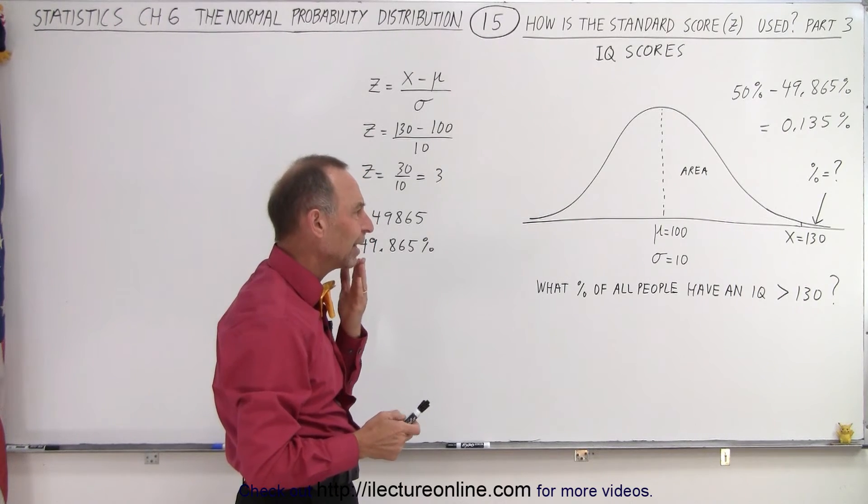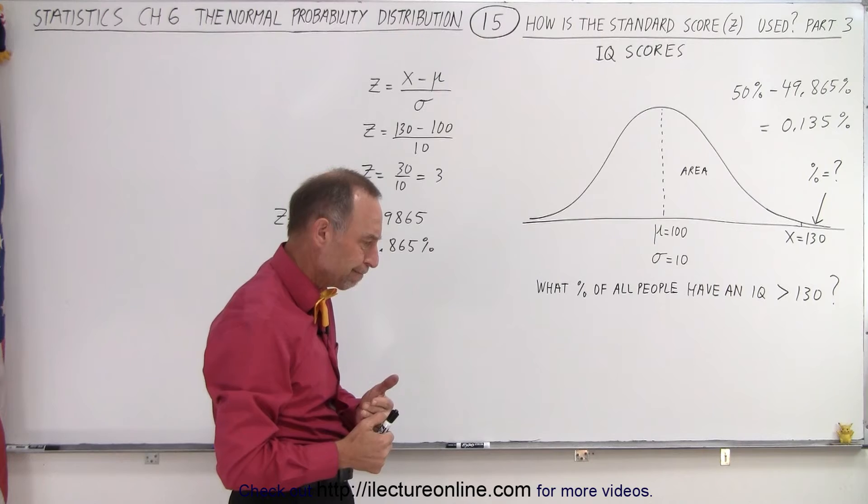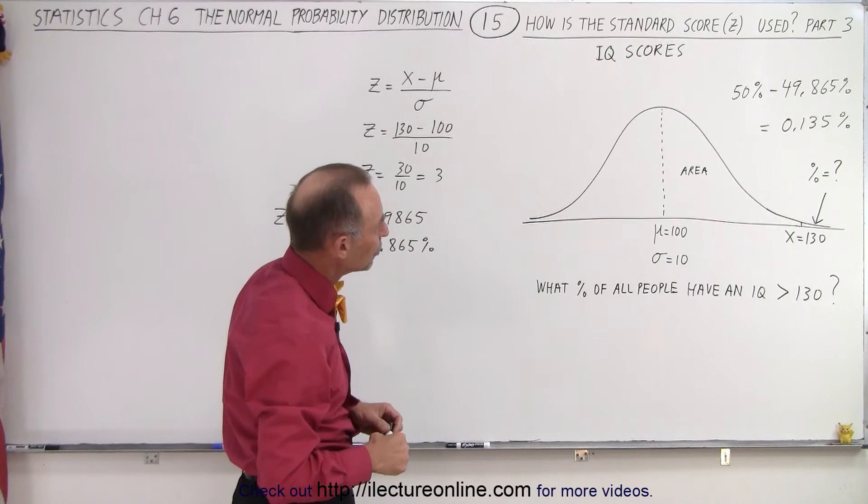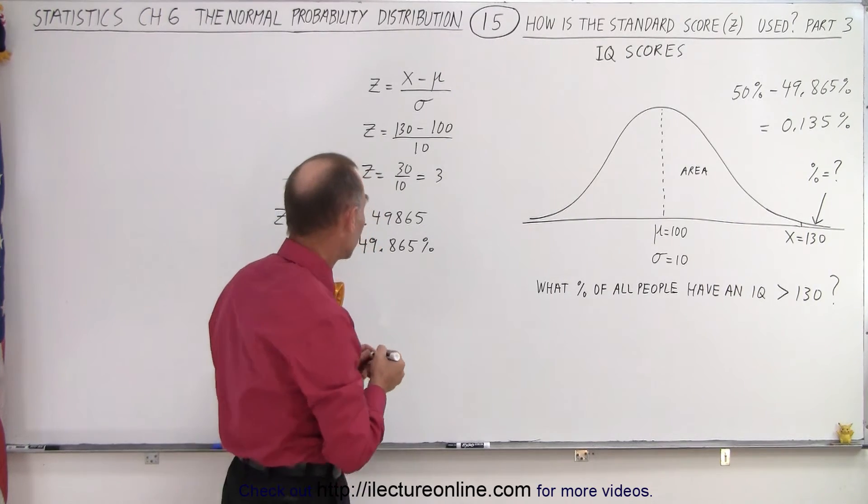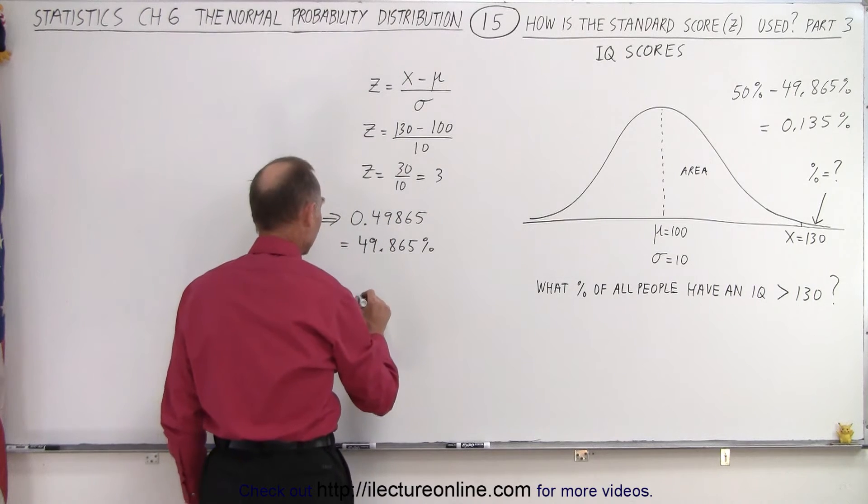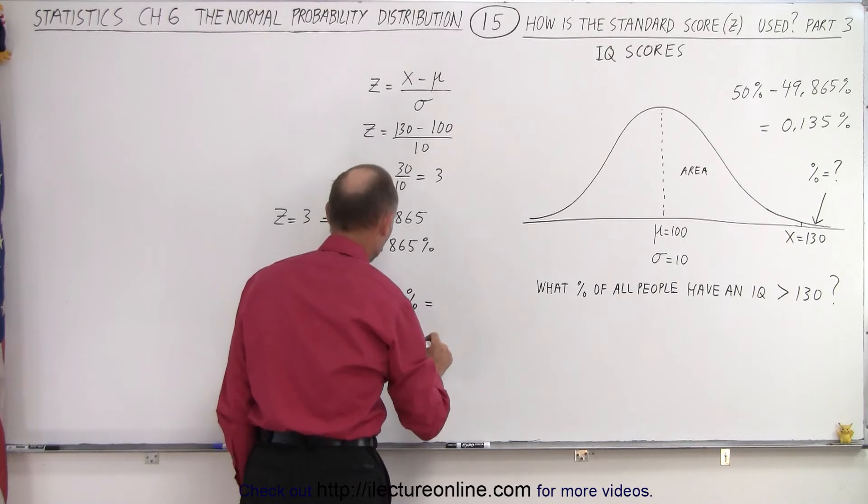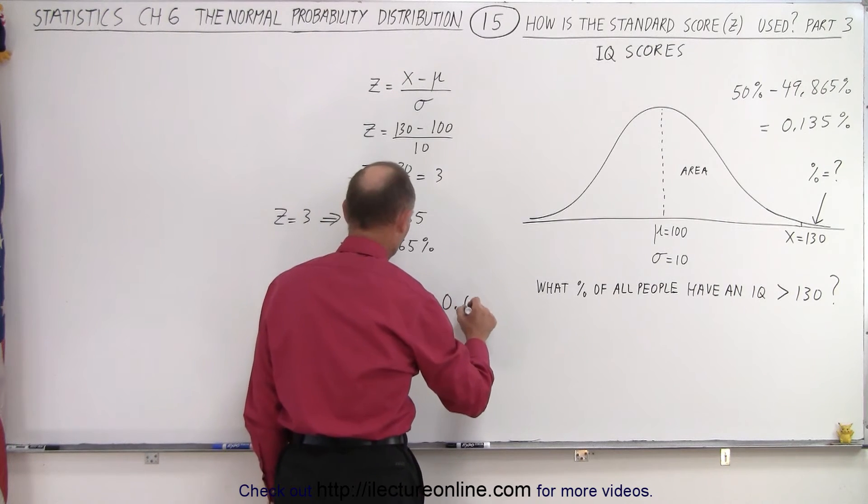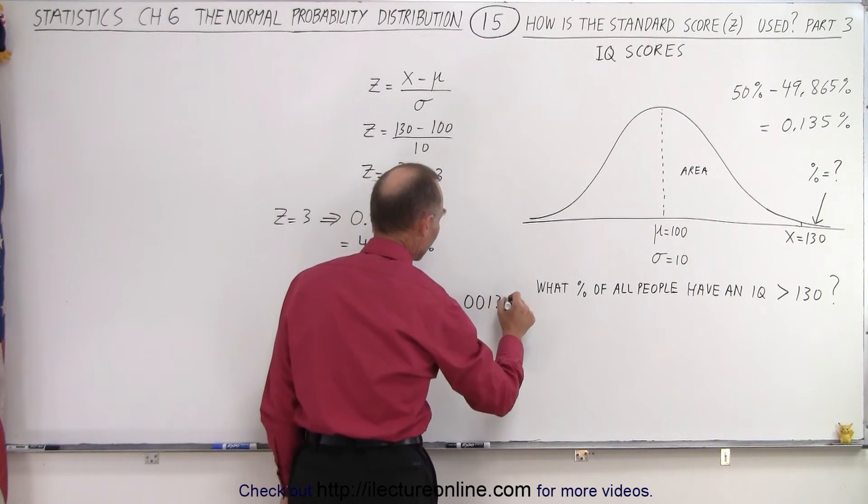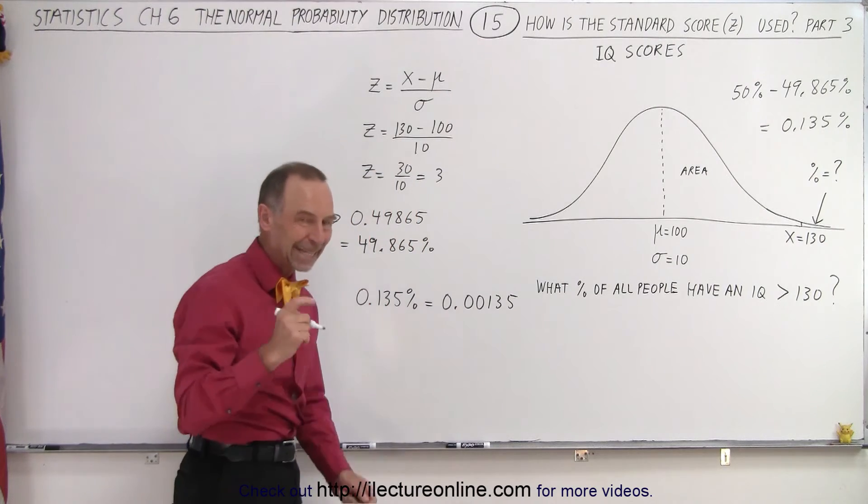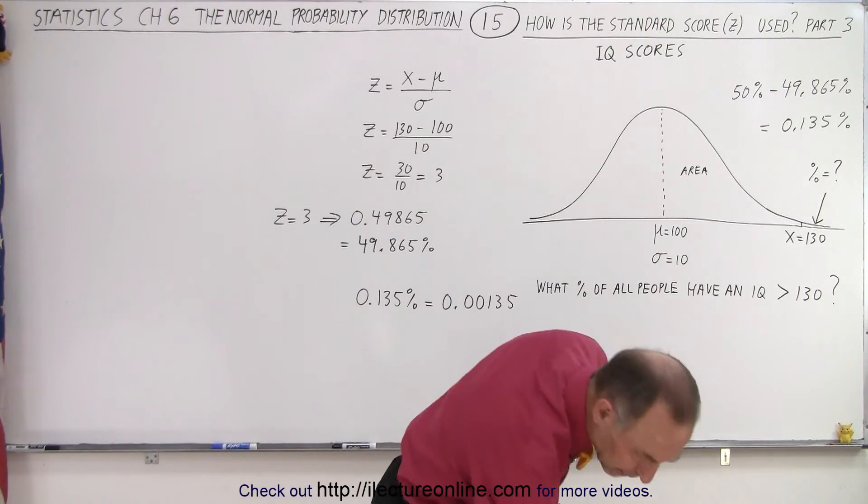So how many people is that? That's one out of how many? How do we do that? Well, we can turn that equation around. We can say that 0.135% equals 0.00135. And now if we take the inverse of that number, of course we need a calculator.